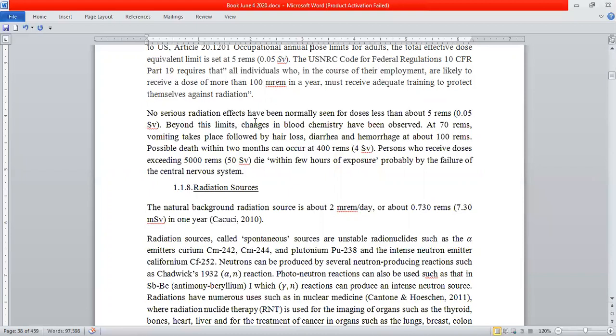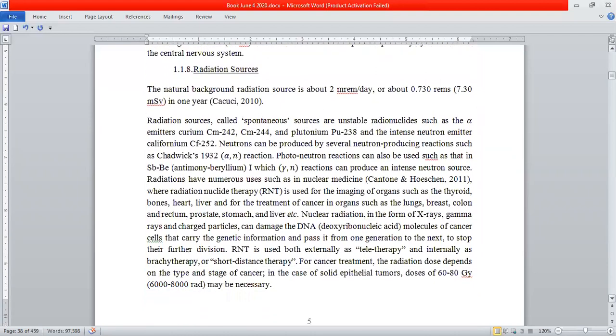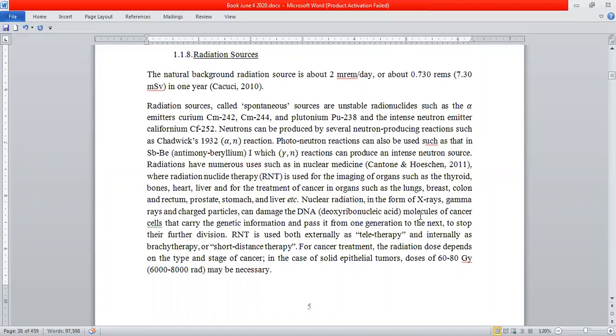What are the numbers? We've seen one number is 5 rem. It has been observed that less than 5 rem you do not have any serious radiation effects. Beyond this limit, changes in blood chemistry have been observed. At 70 rem, a person begins to vomit, and that is followed by hair loss, diarrhea, and bleeding through hemorrhaging at about 100 rem. Possible death can take place within two months if you get a radiation dose more than 400 rem—so this is lethal. Persons who receive doses exceeding 5000 rem in a nuclear blast or something—50 sieverts—would die within a few hours of exposure, probably by the failure of the central nervous system. So radiation is a dangerous thing and we have to take precautions.